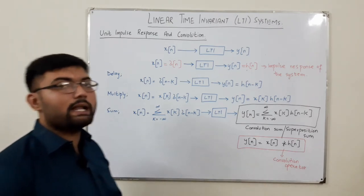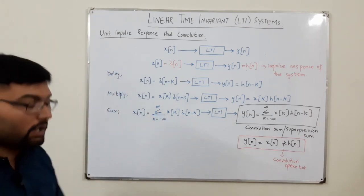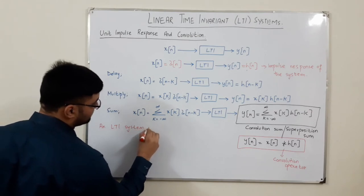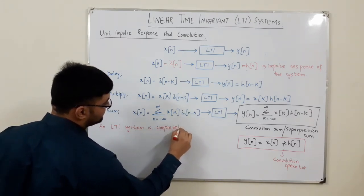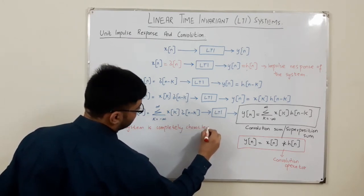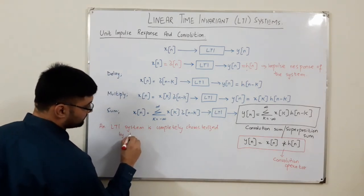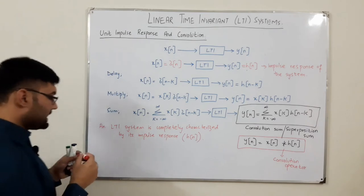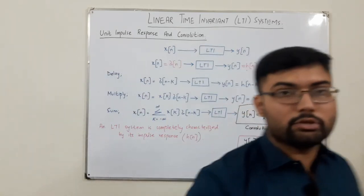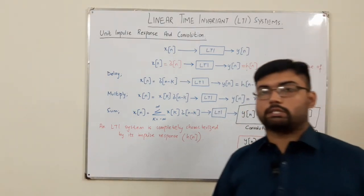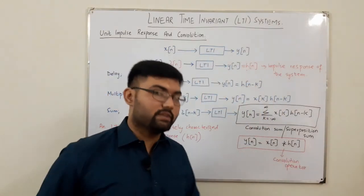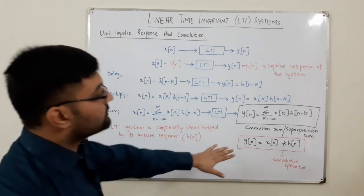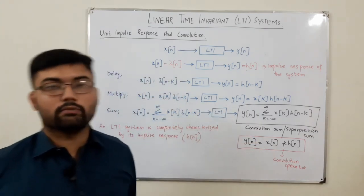An LTI system is completely characterized by its impulse response H of n. What this means is that if you know the impulse response of the system, you know everything about it. You can find the output of the system if the impulse response is known — combined with the current input — through the convolution.